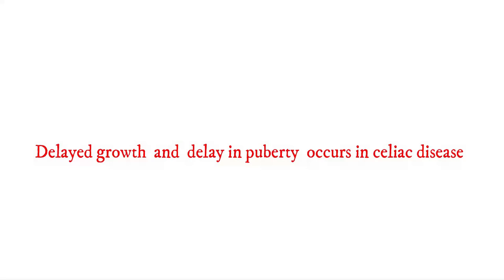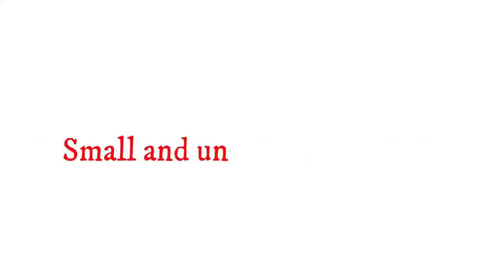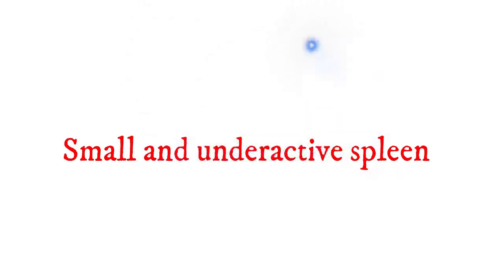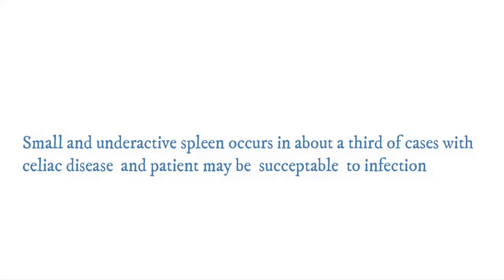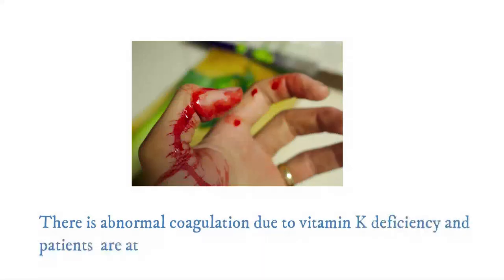Evaluation of growth failure often includes Celiac screening, and this point is commonly discussed in multiple choice questions. A small and underactive spleen occurs in about a third of cases, making patients susceptible to infection. There is also abnormal coagulation due to vitamin K deficiency, putting patients at risk of bleeding.